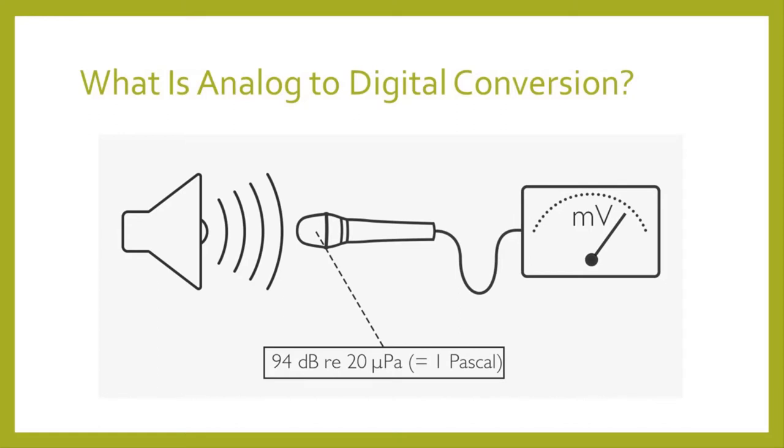Analog-to-digital conversion is pretty much the same principle. What we try to do is take a physical property, like for example, sound, and somehow convert it to a voltage.